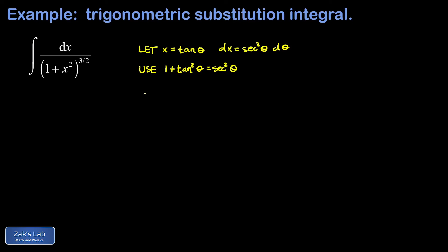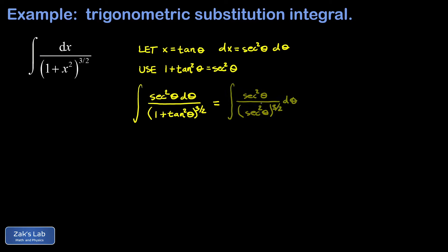Now we can make these substitutions to transform the integral. The point was to simplify 1 plus tangent squared to secant squared. So we have secant squared raised to the 3 halves power in the denominator. Multiplying those exponents gives an exponent of 3 — in other words, secant cubed in the denominator. And we have two factors of secant in the numerator, so we can cancel out two factors of the secant function.